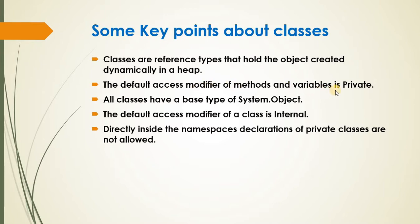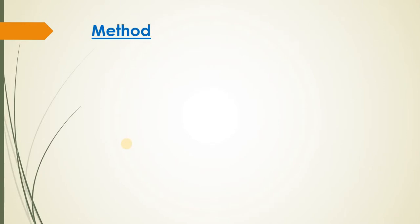The default access modifier for methods and variables is private, and for a class it is internal. Also, directly inside a namespace, declaring private classes is not allowed.